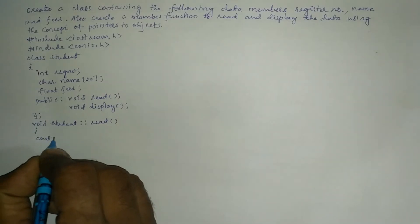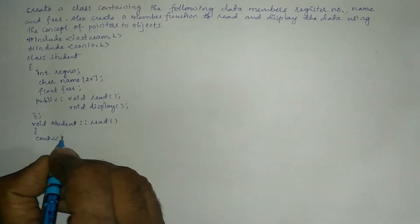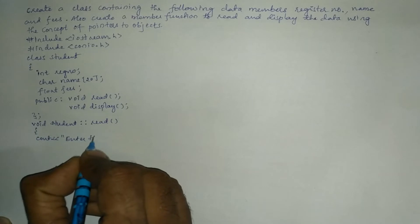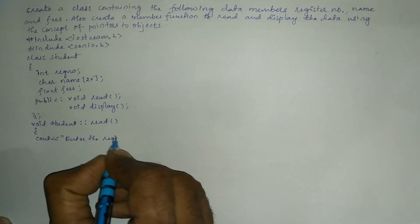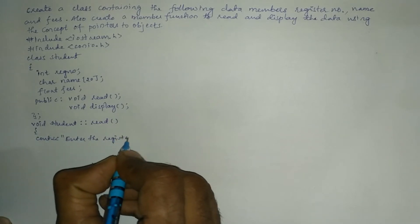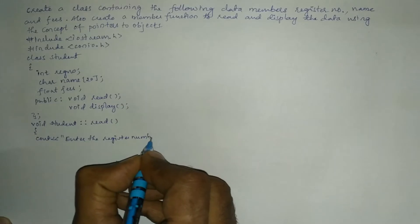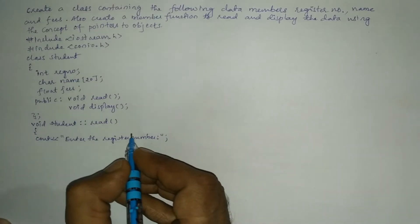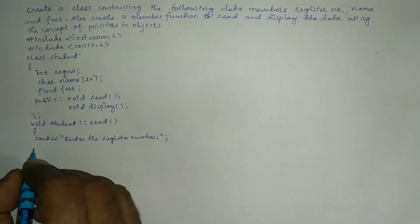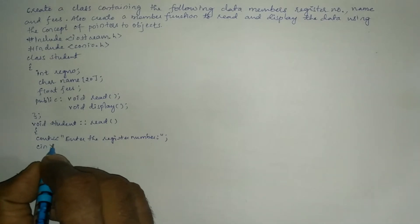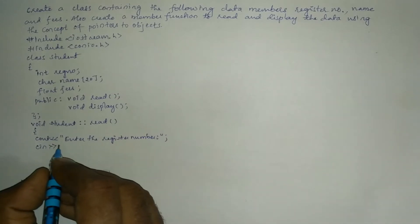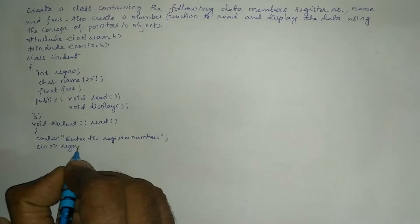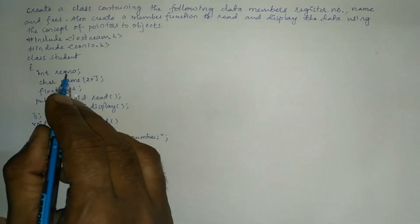Inside the read function, we ask the user to enter the register number using a cout statement: cout with the message 'enter the register number' followed by a semicolon. Then we accept it using the cin stream extraction operator into the variable regno.